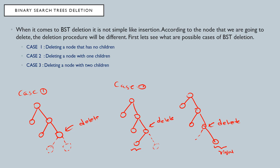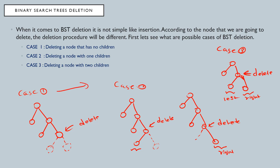Case three means the node has two children. Suppose we have some binary search tree and I am going to delete this node, and this node has both a left and a right child — such a deletion is considered case three. So those are the three cases; this is just the introduction.